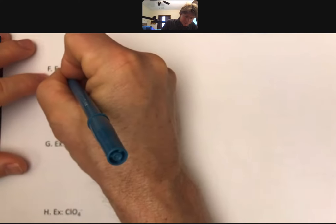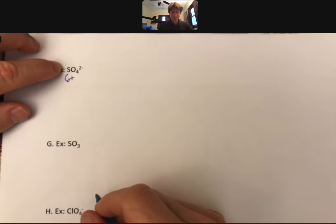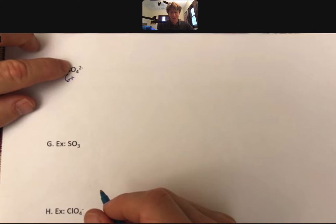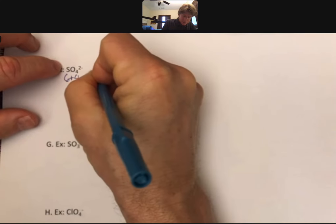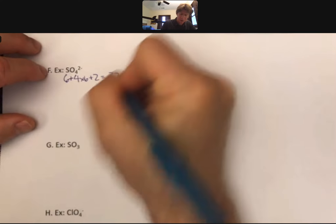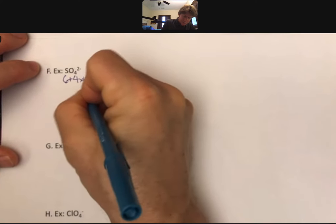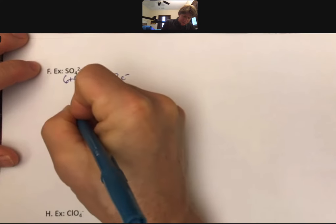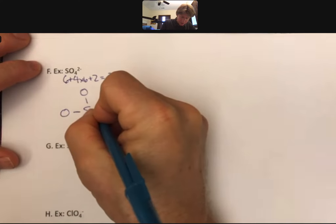So here for sulfur we have six valence electrons. It goes in through the whole process, four times six for oxygen, plus two. If we add that up, that'll be 32 electrons for our Lewis structure. We're going to put our sulfur in the center because it is less electronegative. We're going to put all of the oxygens around it.